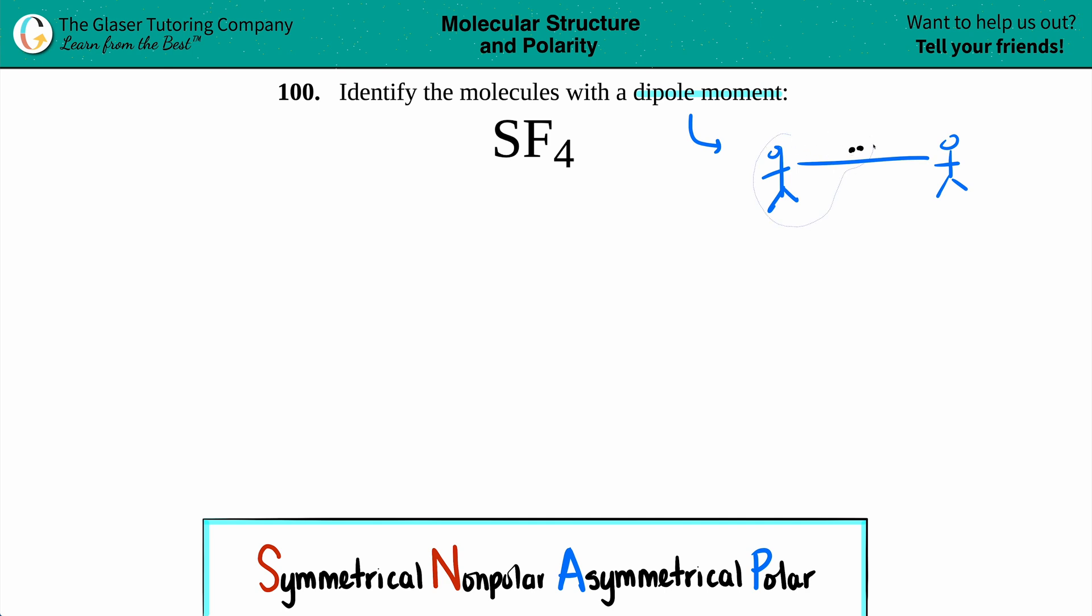And if one atom pulls the rope one way, it's an unequal distribution. Clearly, this one pulled the electrons away from the other person or the other atom. And when you have that unequal pulling, that's a dipole moment.